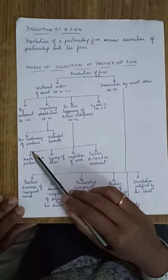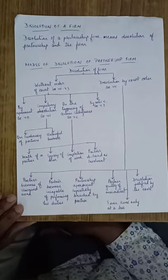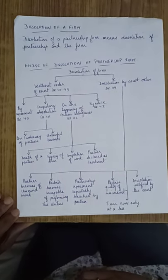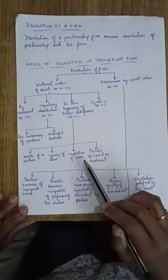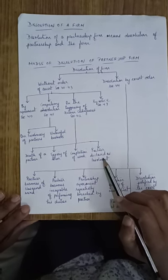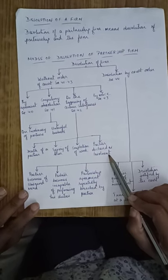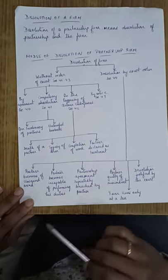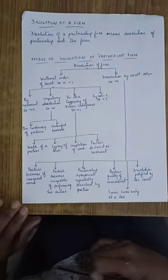The first condition for compulsory dissolution is when all partners become insolvent — meaning bankrupt and unable to contribute to the business. The second is when the business becomes unlawful. On the happening of any contingency, this can include the death of a partner, expiry of the term of the partnership, or completion of the work for which the firm was constituted. The fourth condition is when one partner is declared insolvent — different from insolvency of all partners.